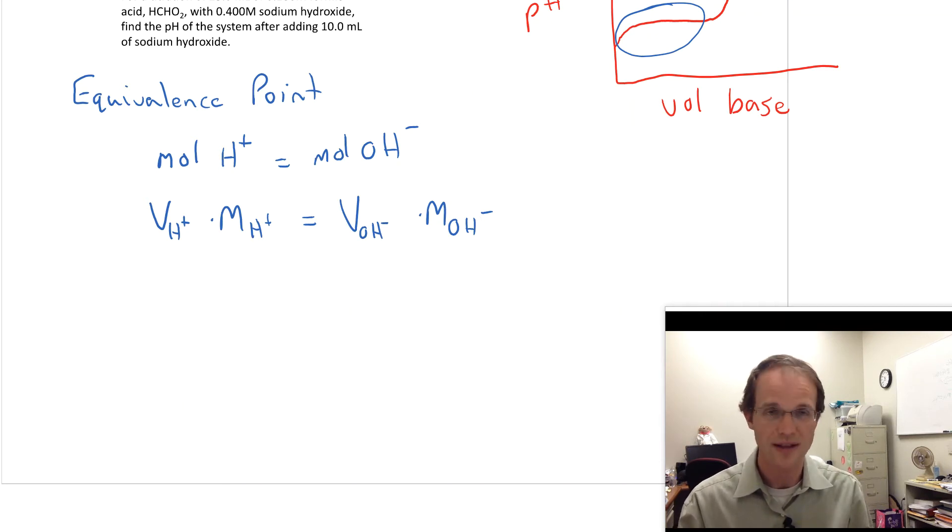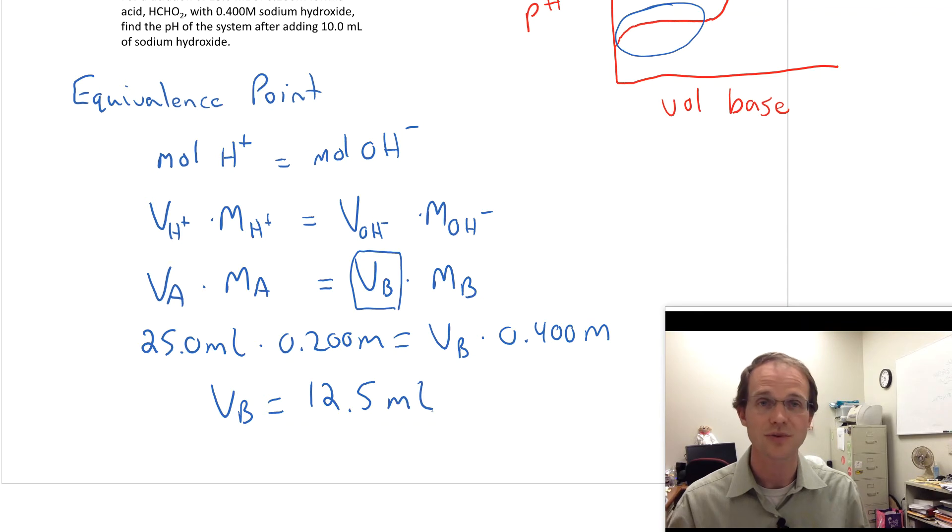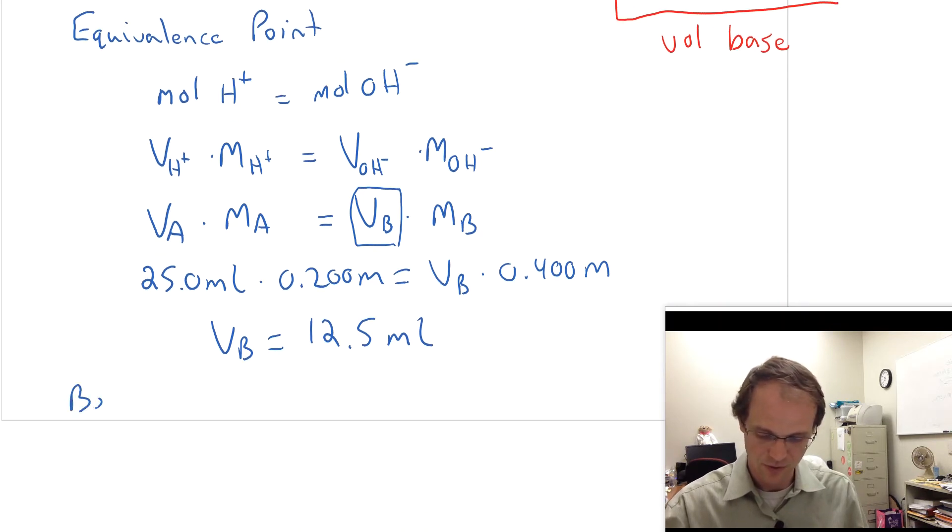If I had diprotic or triprotic, it wouldn't work quite the same way. But in this case, it's pretty simple. So here I'm actually going to change this to the volume of acid times the molarity of the acid is the volume of the base times the molarity of the base to find the equivalence point. So I put in data from the problem. I've got that 25.0 milliliters of acid and it's 0.200 molar is the volume of the base times the molarity of the base, which is 0.4 molar. And I find that I need 12.5 milliliters of base to reach the equivalence point. And if you look at our problem statement, I've only added 10 milliliters of base, which means I'm before the equivalence point. We know we are before the equivalence point and that's going to be very important.